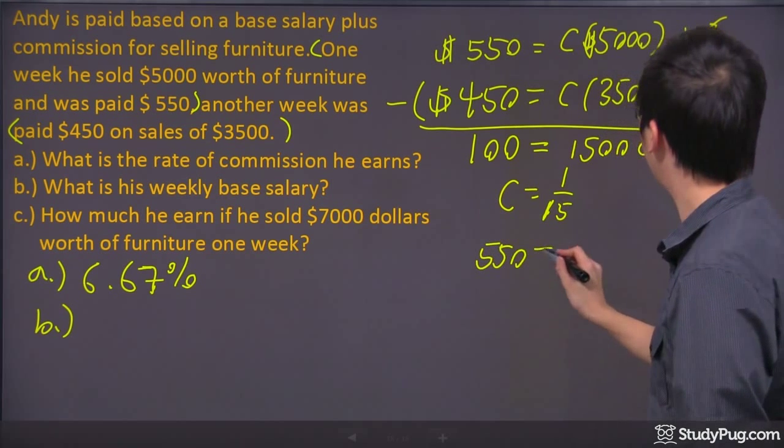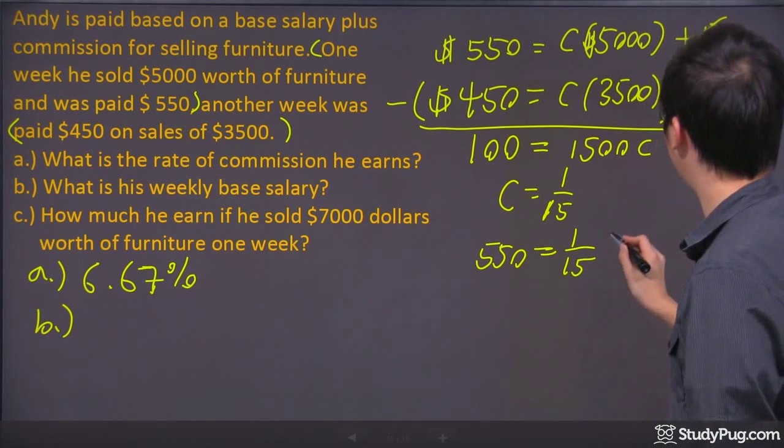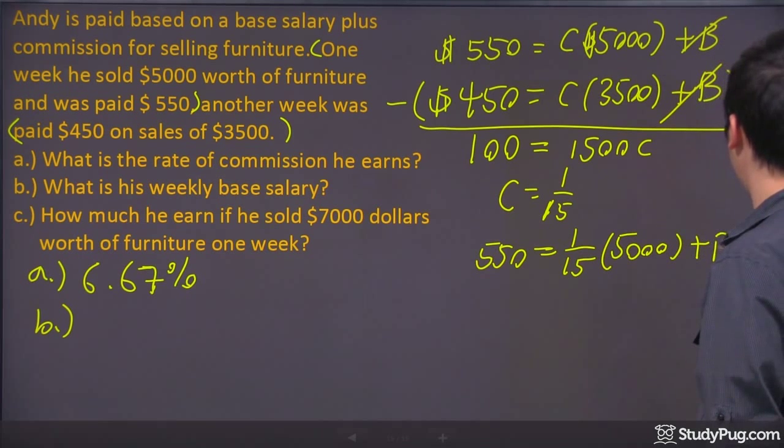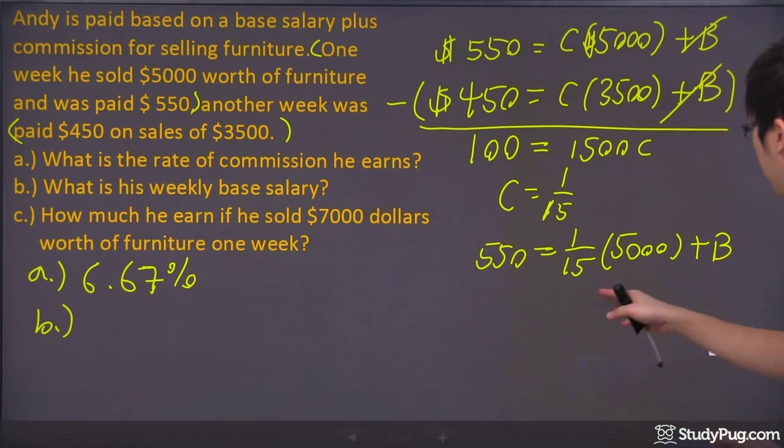It would be 550 equals to 1 over 15 of my $5,000 and plus the B. If you do that quickly, it will be $5,000 divided by 15. I got $333 here.